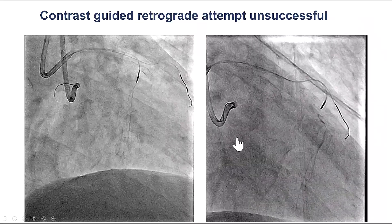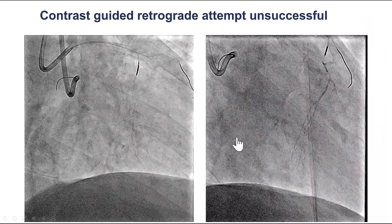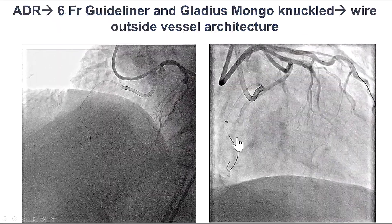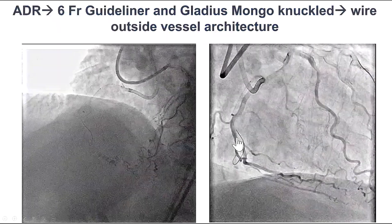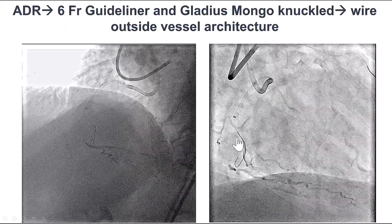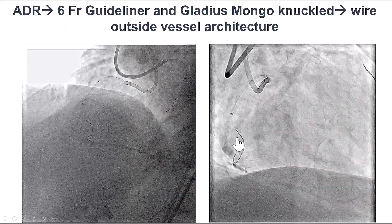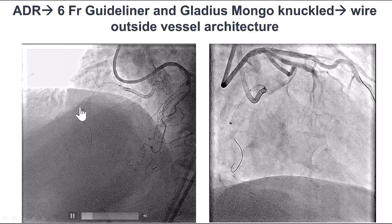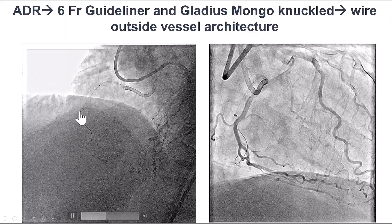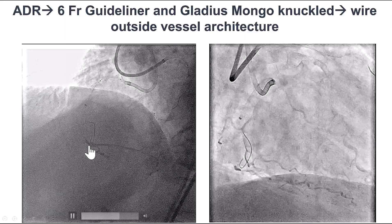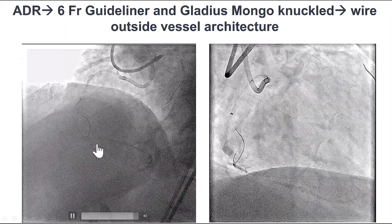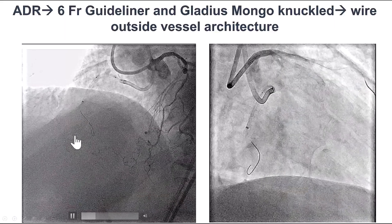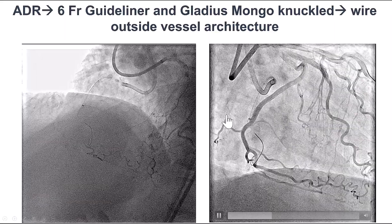After multiple attempts, the decision was to go back to antegrade and do ADR. We used a guide extension that provided a little more support, and then we knuckled a Gladius Mongo guidewire, which however seemed to go in an unusual course — more along the side of an acute marginal instead of going down the RCA.